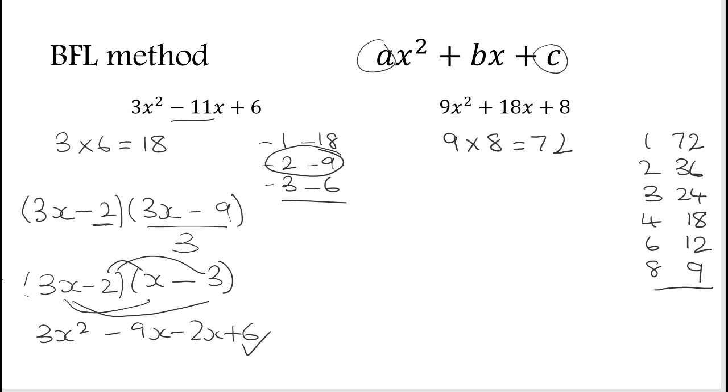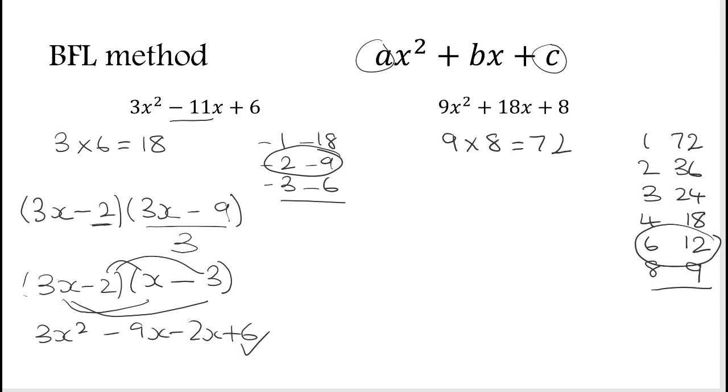When you're doing these factor pairs, if you can't do the times tables quickly enough in your head, just use the calculator. It's what it's there for. So we're looking for two numbers that multiply to make 72 and add to make 18, so they're both positive, and we can see that it must be those two.